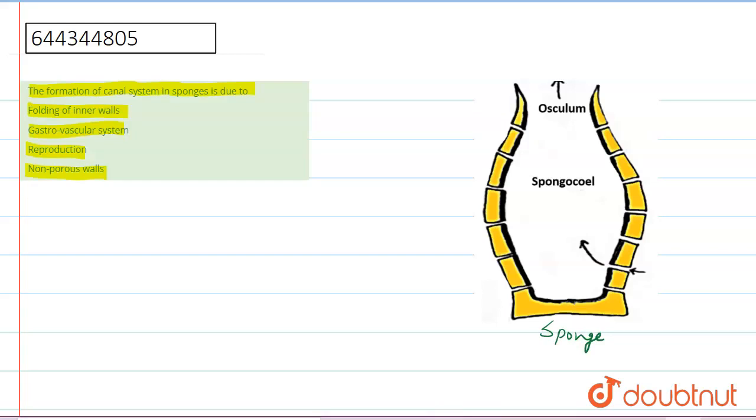these are the pores, and these pores are known as ostia. So we can say that the water enters through ostia to spongocoel. So what is spongocoel? Spongocoel is a cavity. So